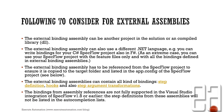The external binding assembly can be another project in the solution or a compiled library of another project. It can also use a different .NET language — for example, you can write the bindings in your C# SpecFlow project also in F#, which is really cool. The external binding assemblies have to be referenced from the SpecFlow project to ensure they are copied to the target folder and listed in the app.config. The external binding assemblies can also contain different types of bindings — step definitions, hooks, and step argument transformations as well.